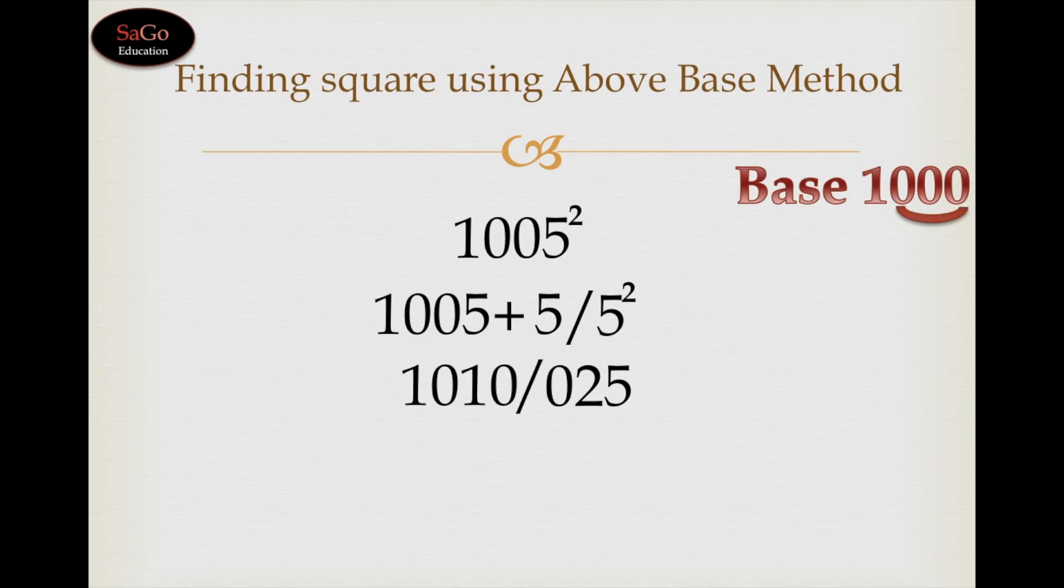And the square is 25 which is a two digit number. To balance the number we will prefix 0 before 25. Write down 025 and multiply 1010 by 1 because we have taken the base 1000.